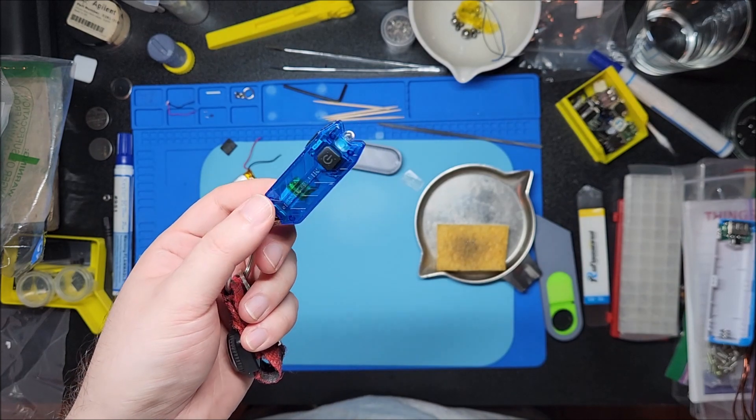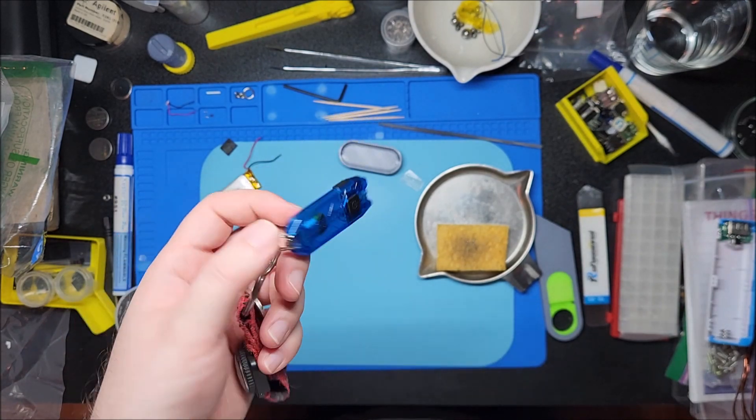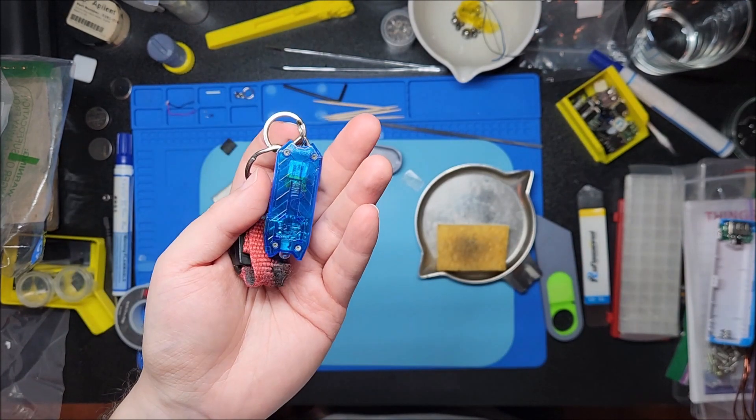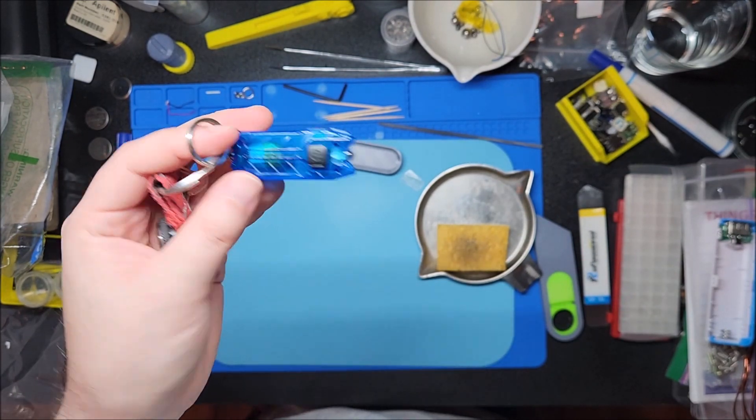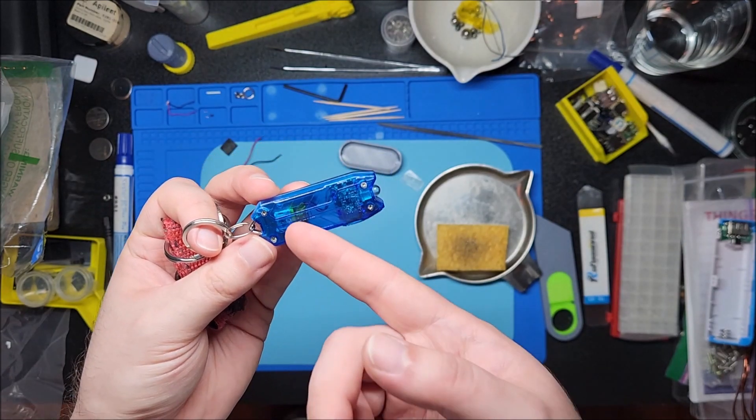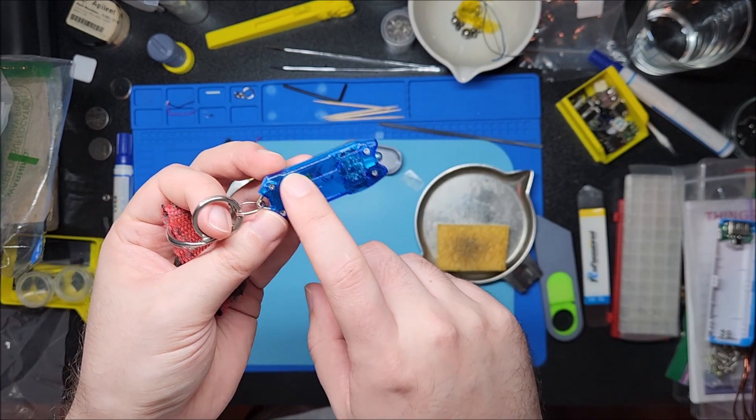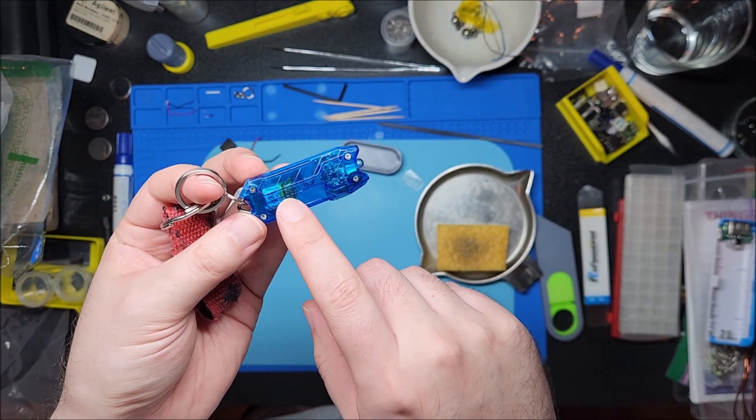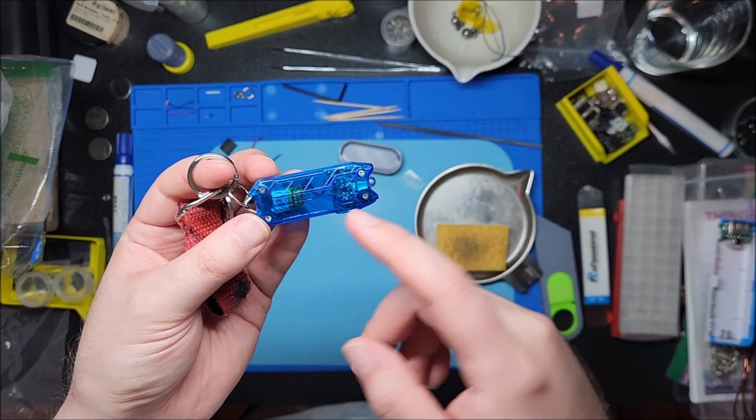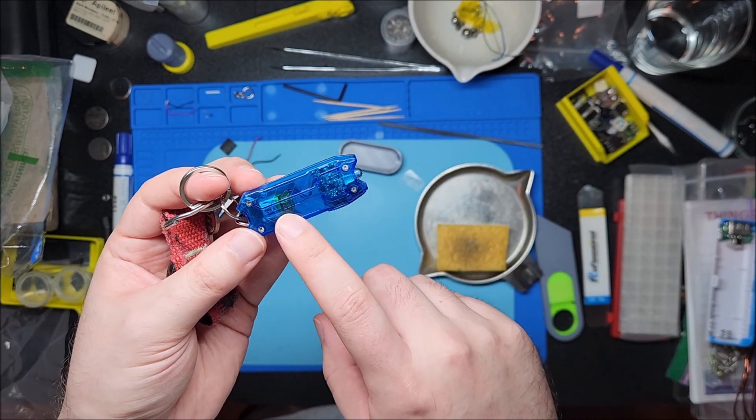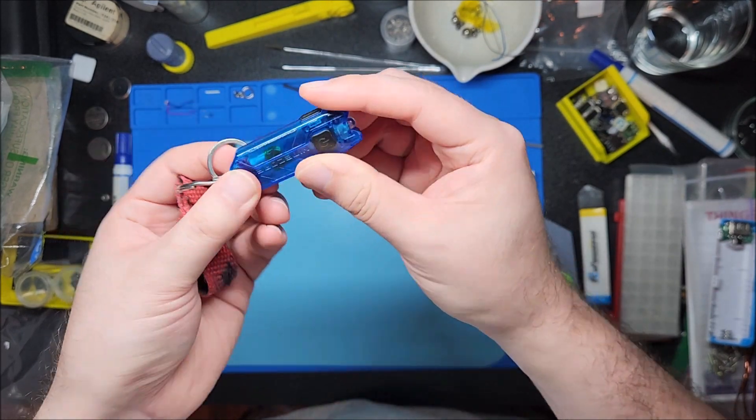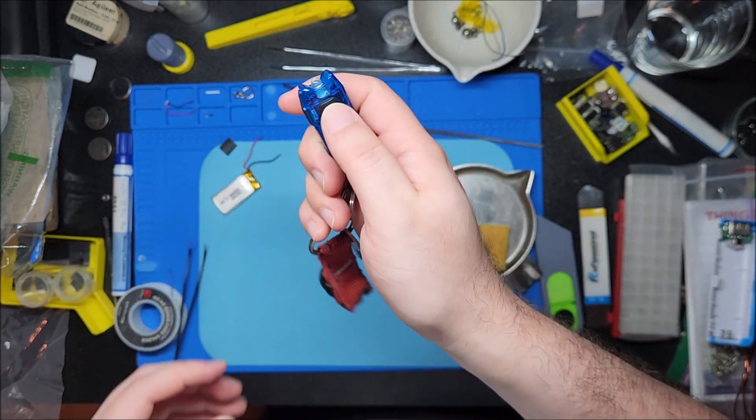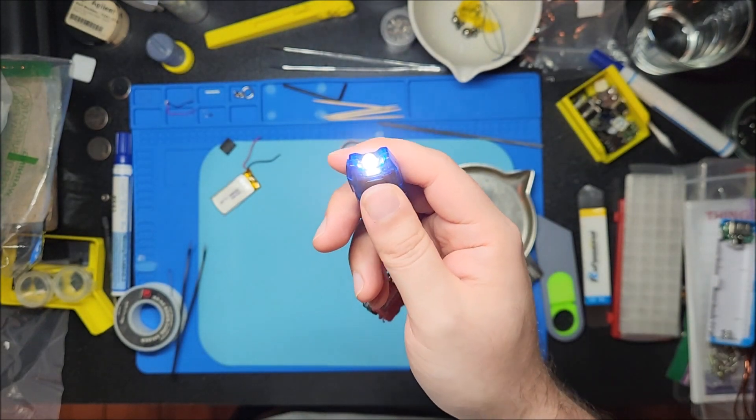Hopefully you guys enjoyed this video. If you have a Nitecore tube light that the battery is not doing so hot, yeah you can replace them with random batteries. This one I pulled from a pair of true wireless earbuds that I had. The battery was small enough to fit and it closes fully so I'm happy with that. Hopefully you guys enjoyed this video and I'll see you in the next one. Bye.